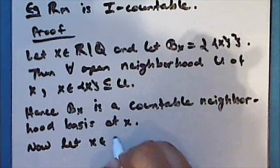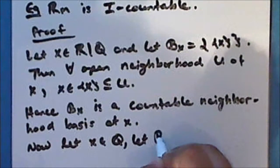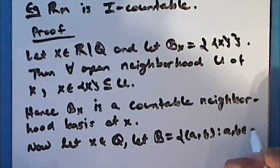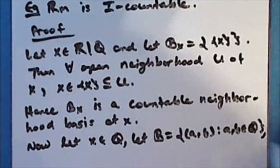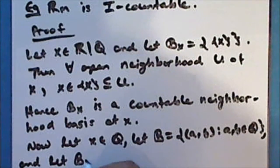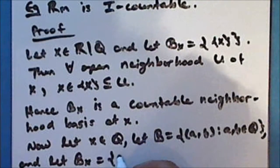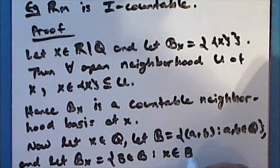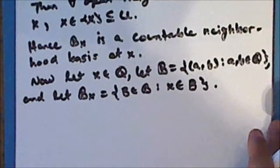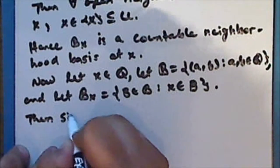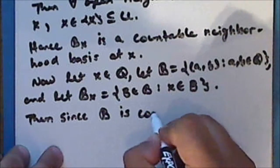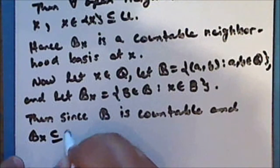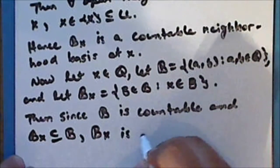Now let x be a rational number. Let the collection ℬ be the set of all open intervals from a to b, where a and b are rational numbers. And let the collection ℬ_x be the set of all elements in ℬ that contain the point x. Then, since ℬ is countable and ℬ_x is a subset of ℬ, the collection ℬ_x is also countable.